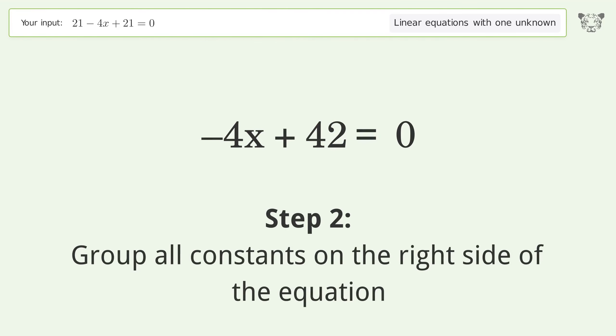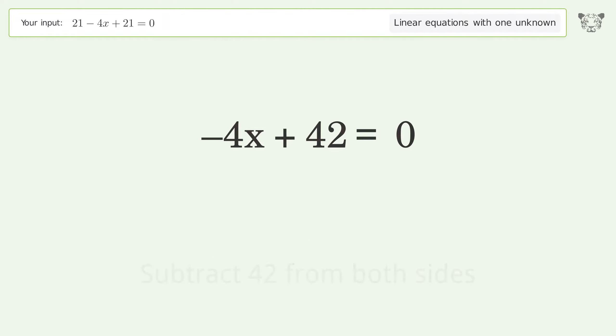Group all constants on the right side of the equation. Subtract 42 from both sides. Simplify the arithmetic.